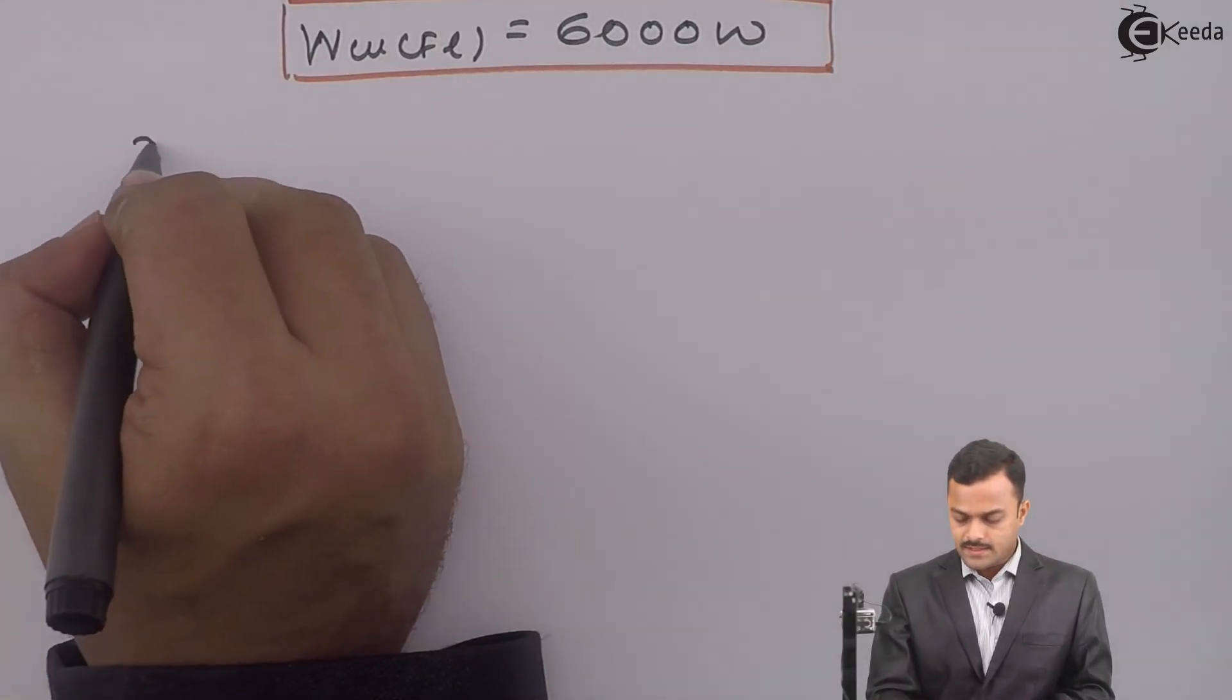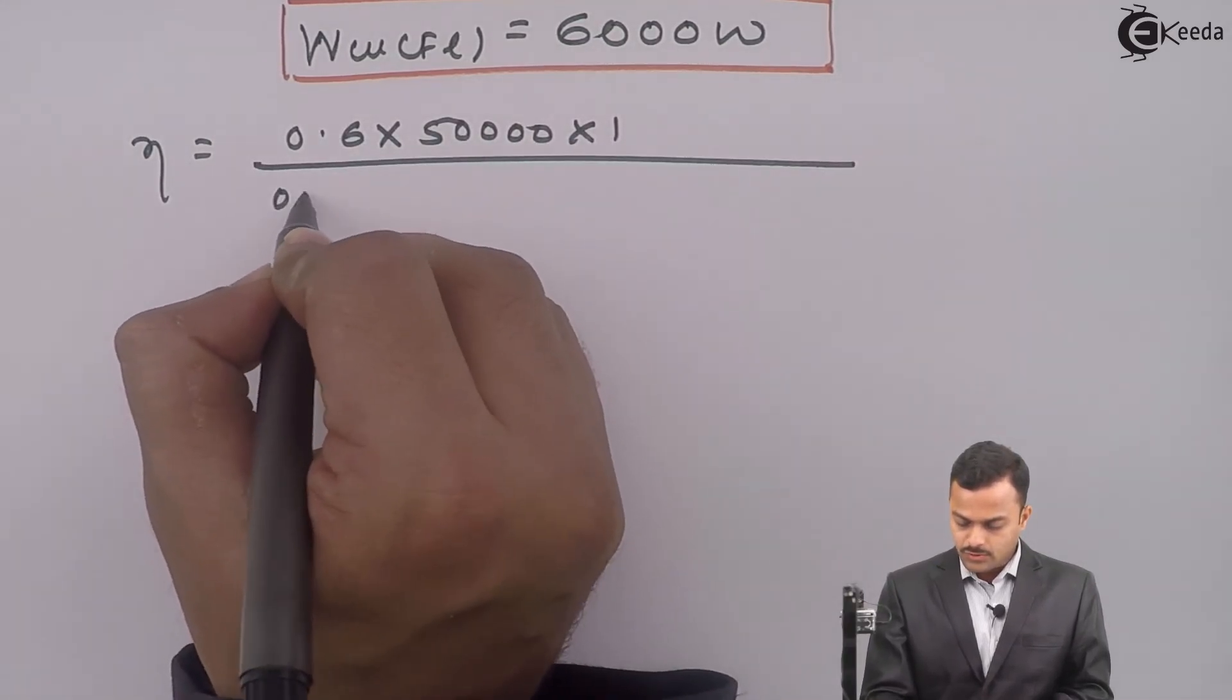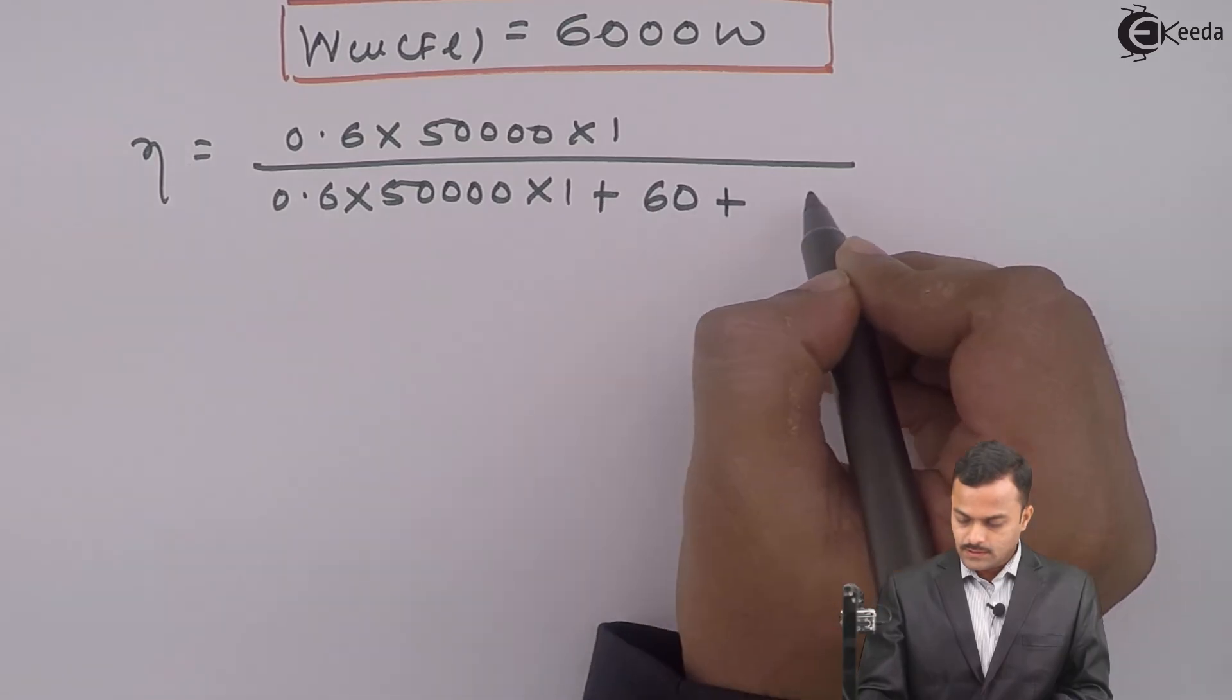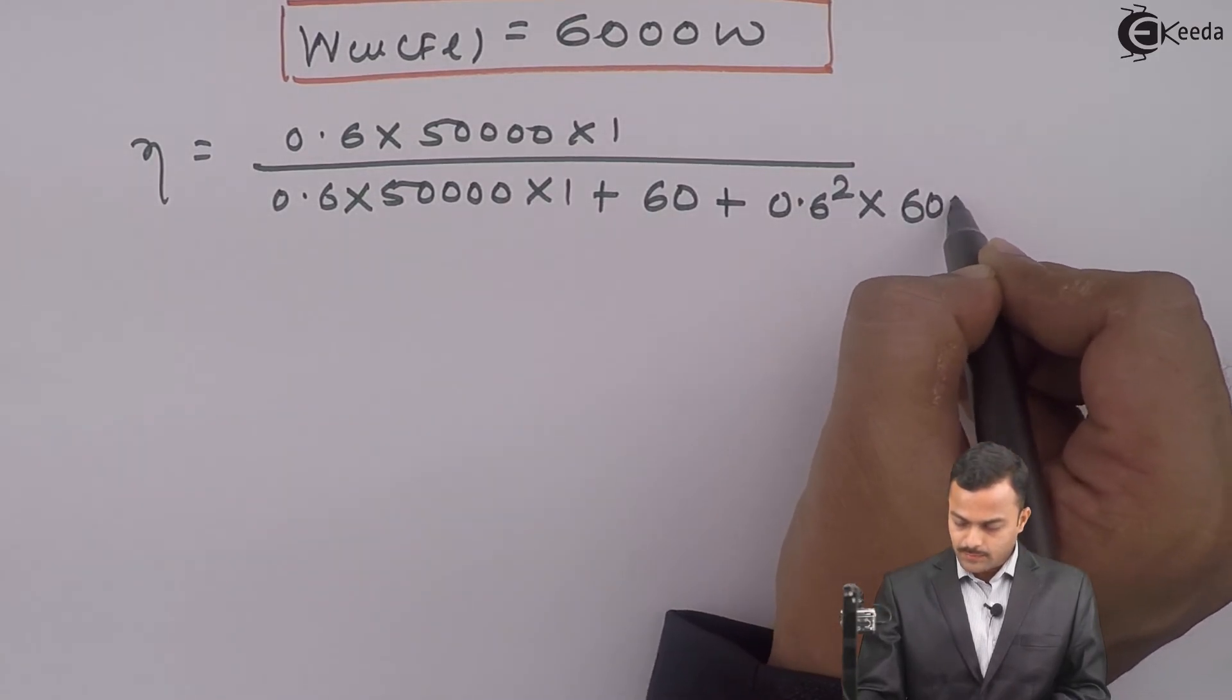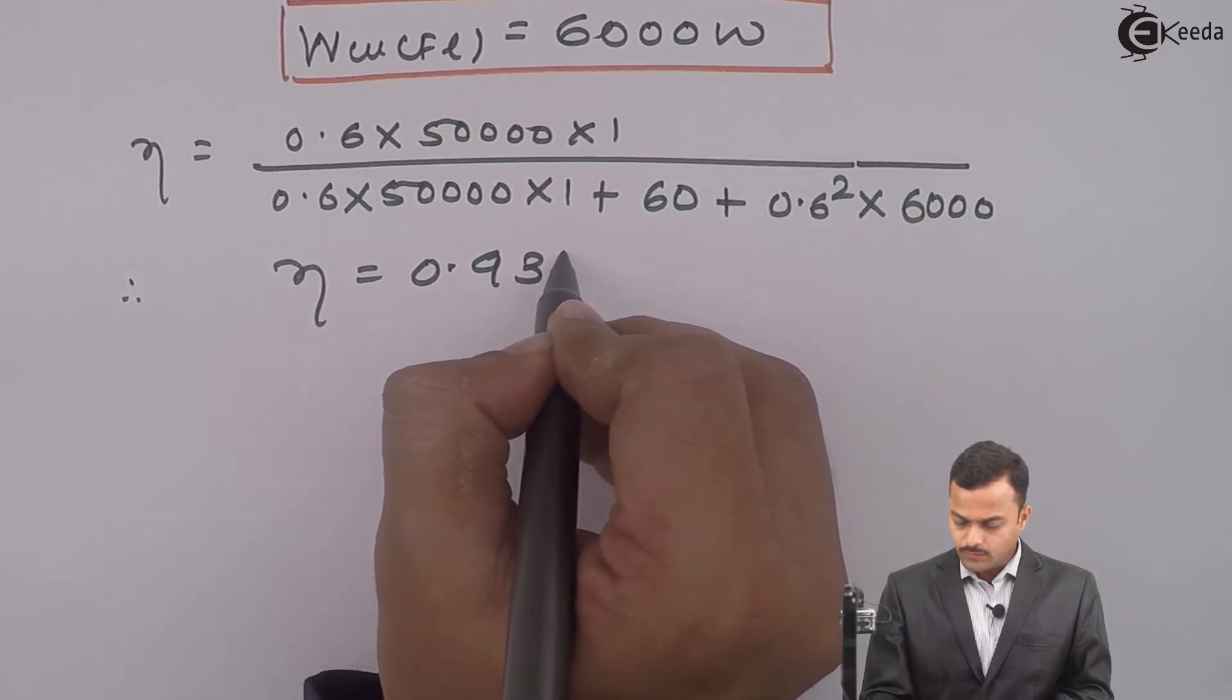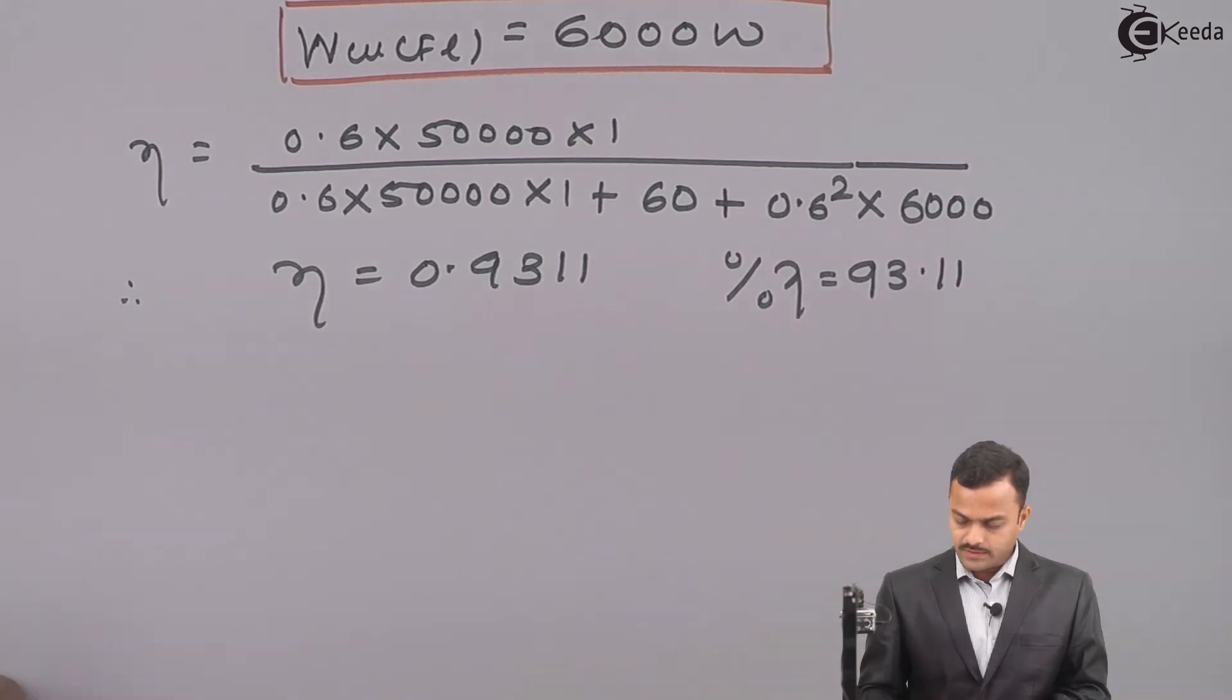Now efficiency equals 0.6 into 50,000 multiplied by 1 upon 0.6 multiplied by 50,000 into 1, iron loss is 60, X is 0.6, so 0.6 square multiplied by 6000. Efficiency equals 0.9311, in percentage 93.11%.